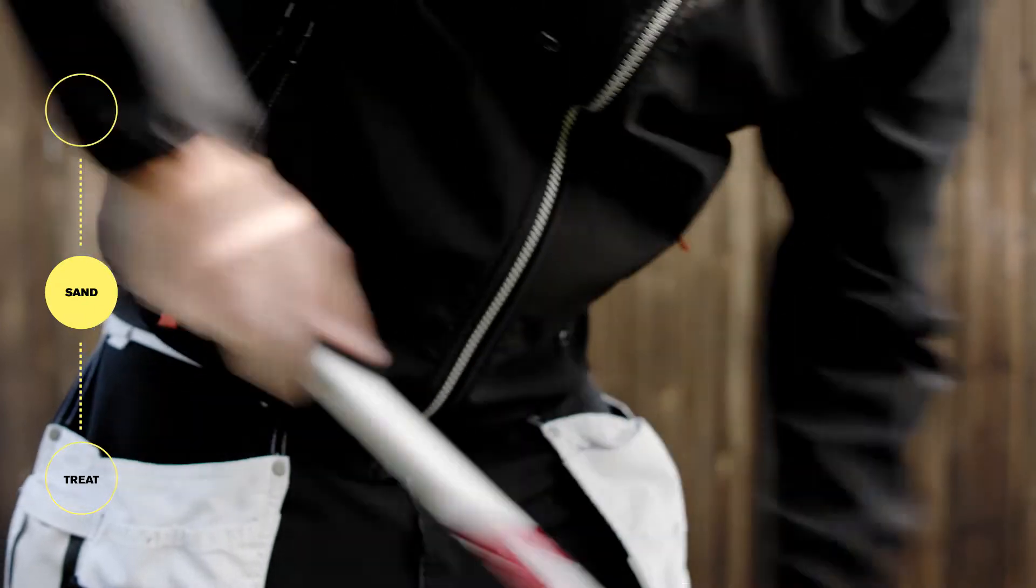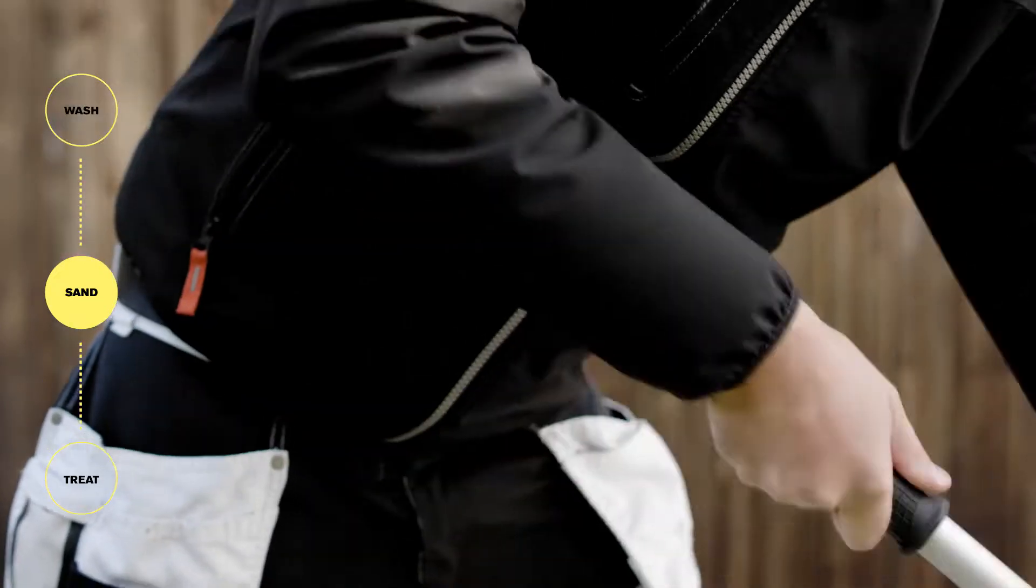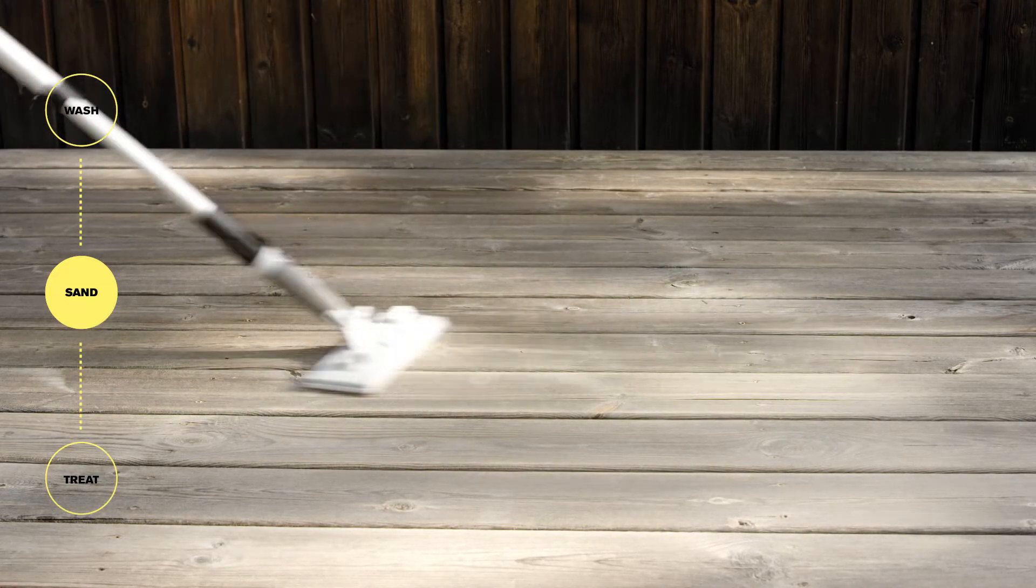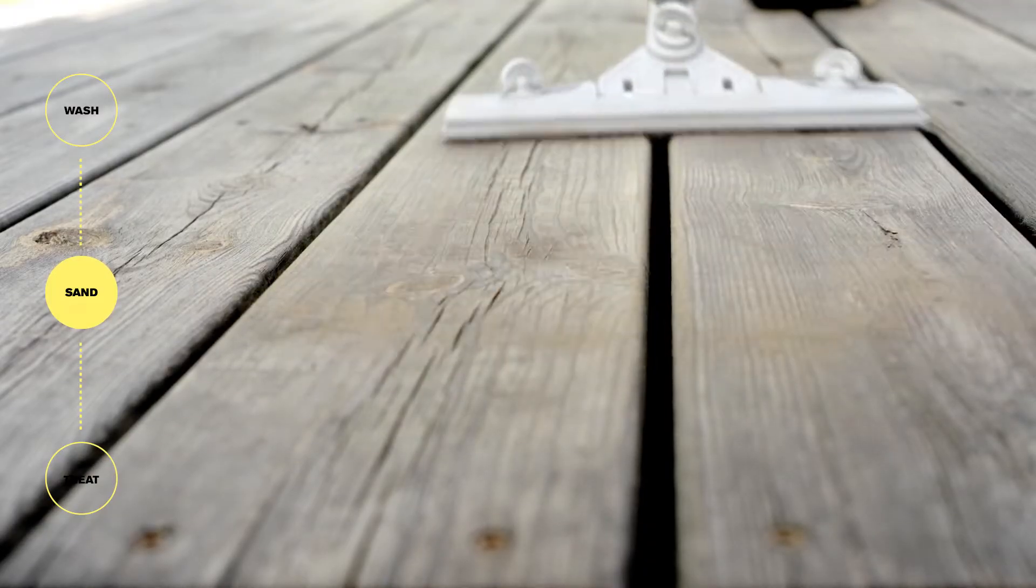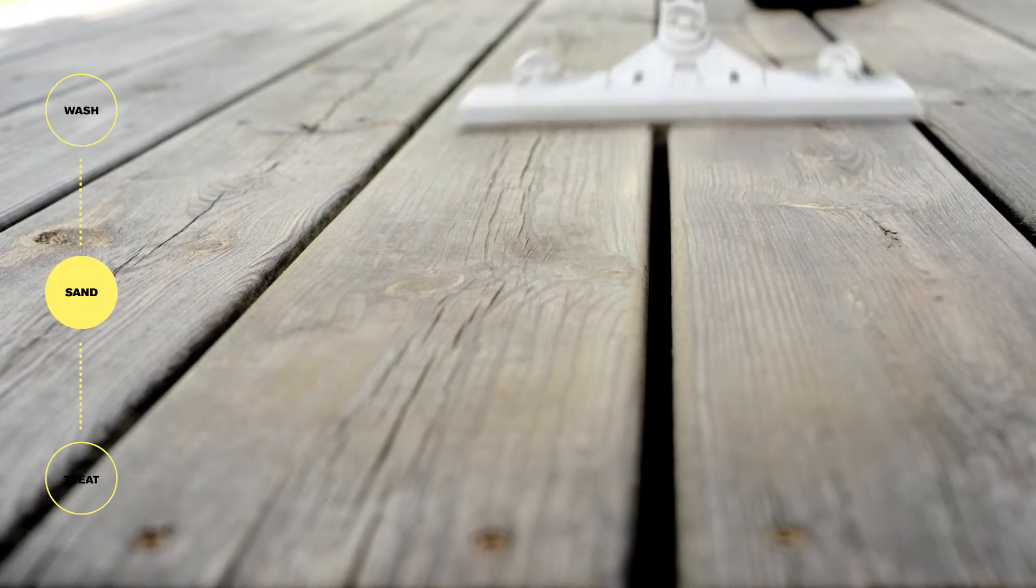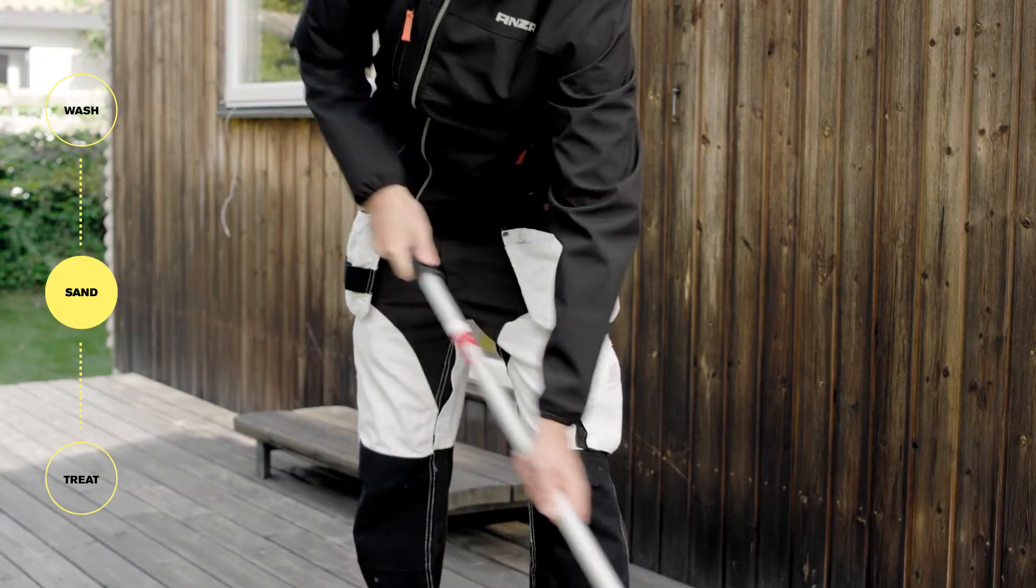Use an extension pole, it makes the work easier. Sand off sharp edges, splinters and uneven parts. Go over the whole surface one extra time to make sure that the surface is really barefoot friendly.